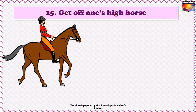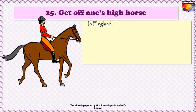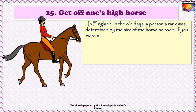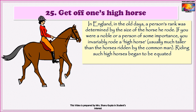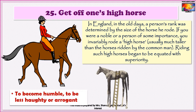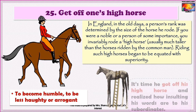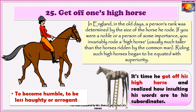The 25th idiom is To get off one's high horse. This idiom originates from England, where in the old days a person's rank was determined by the size of the horse he rode. If you were a noble or person of some importance, you invariably rode a high horse — usually much taller than horses ridden by the common man. Riding such high horses began to be equated with superiority. So if you are riding your high horse, you are acting superior to others. Get off one's high horse would figuratively mean to become humble or to be less haughty. Example: It's time he got off his high horse and realized how insulting his words are to his subordinates.